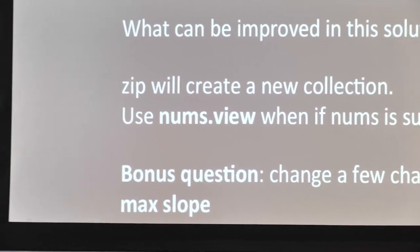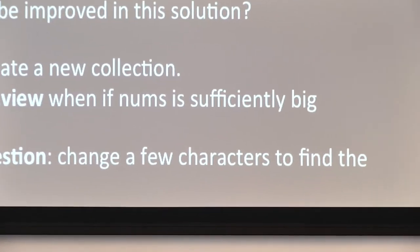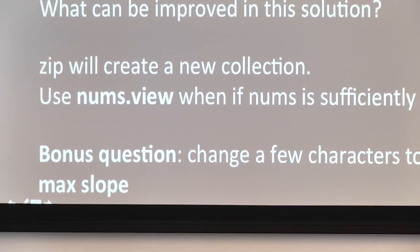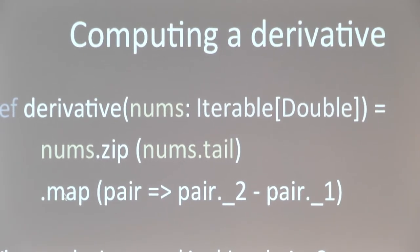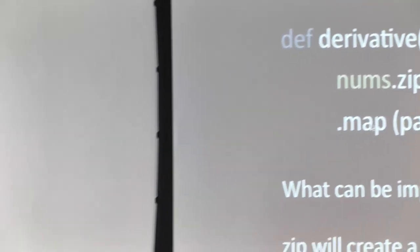Here's a bonus question. The answer involves using maxBy — maxBy is going to return the pair that has the highest slope. So instead of map, we write maxBy, and it uses the difference as the criteria for finding the maximum element.